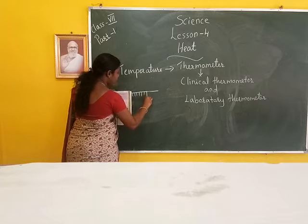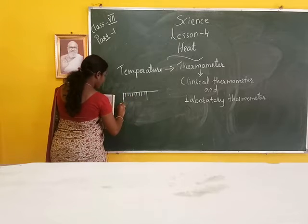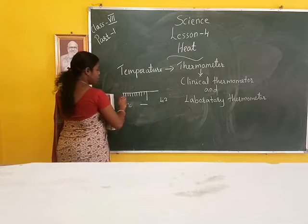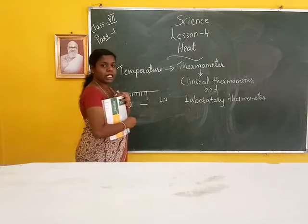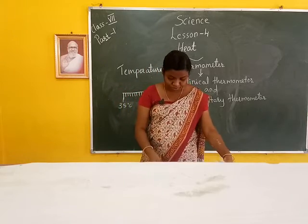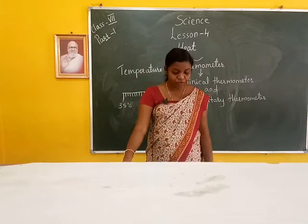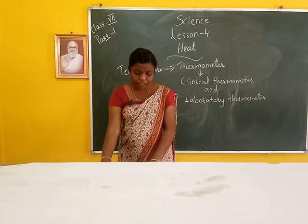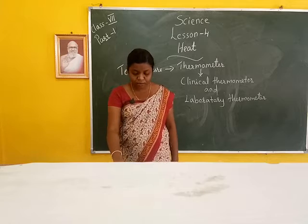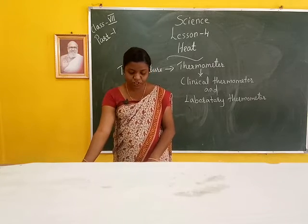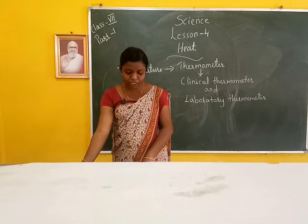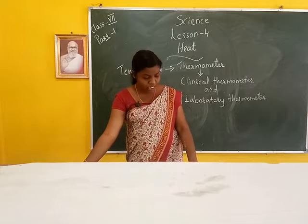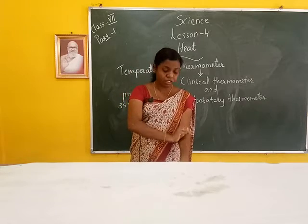The scale starts from 35 to 42 degrees Celsius, and each division represents one degree Celsius. The clinical thermometer has a very short range of temperature — from 35 degrees Celsius to 42 degrees Celsius.